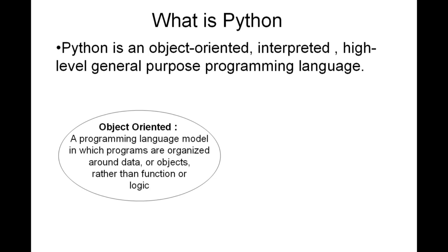Object oriented programs like Java, C++ and Python are more modular. We create classes and then we use them.